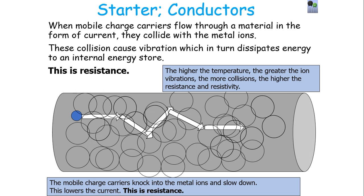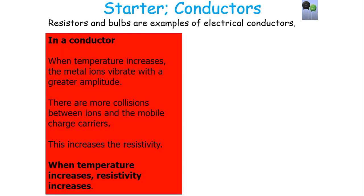At a lower temperature, there's a smaller amplitude of vibration for the metal ions, so there are fewer collisions, less energy is dissipated, and the resistance and resistivity is lower. To summarise: with a conductor, when you increase the temperature, the metal ions vibrate with a greater amplitude, so there are more collisions between the mobile charge carriers and the metal ions, which increases resistivity. When temperature increases, the resistivity increases also.